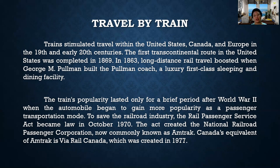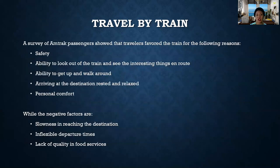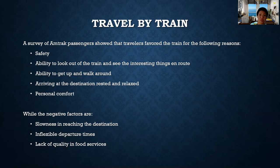The Rail Passenger Service Act created the National Railroad Passenger Corporation, now commonly known as Amtrak. Canada's equivalent of Amtrak is Via Rail Canada, which was created in 1977. In Europe, they have the Eurail system with a Eurail pass used like a passport. Since different European countries are separated only by land borders, people could travel to around 10 countries using train, showing the Eurail pass upon entering another country together with other travel documentation.